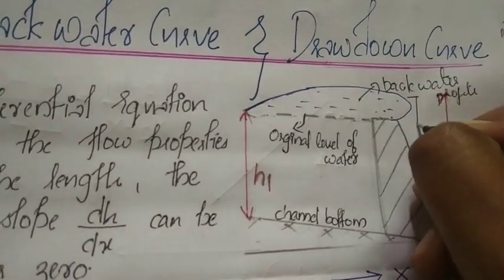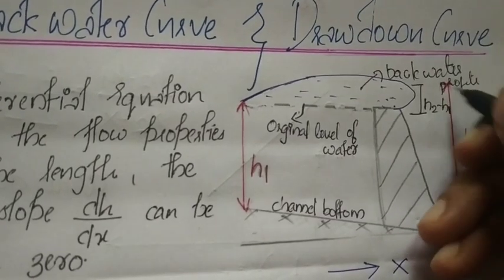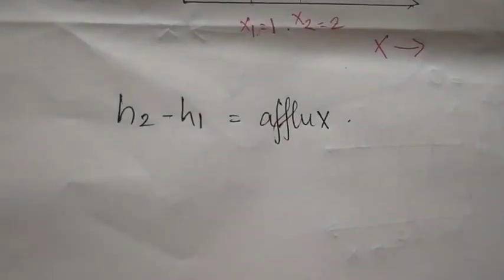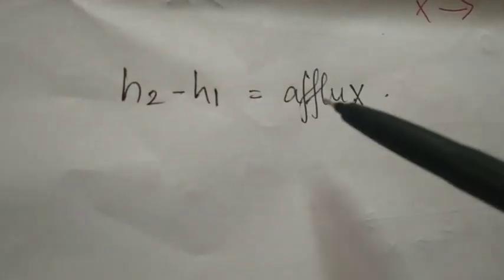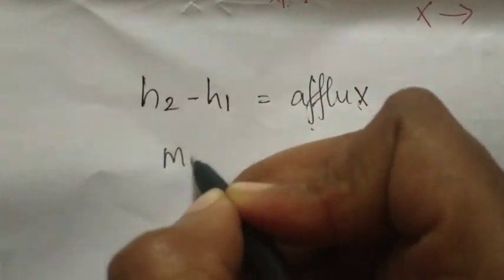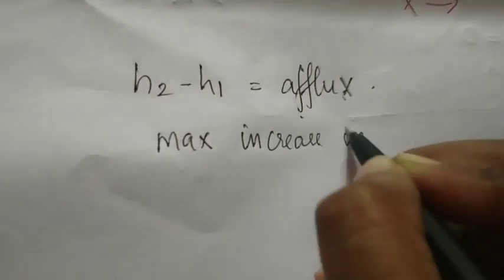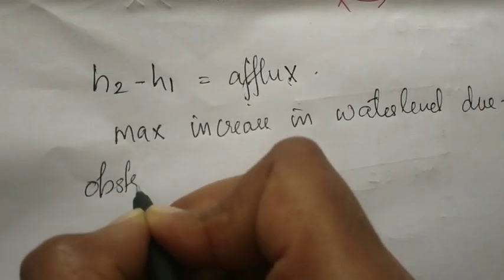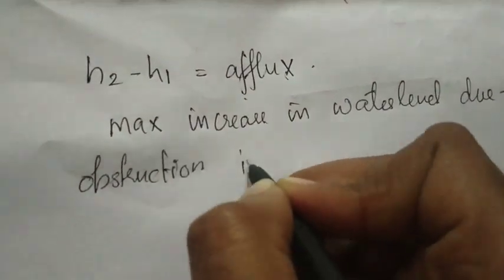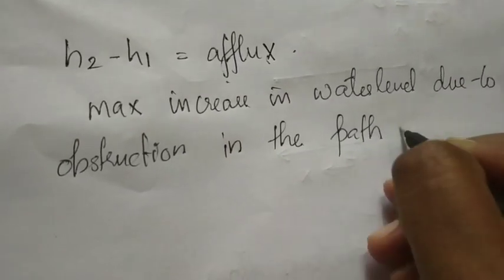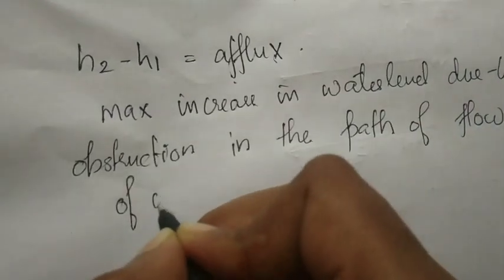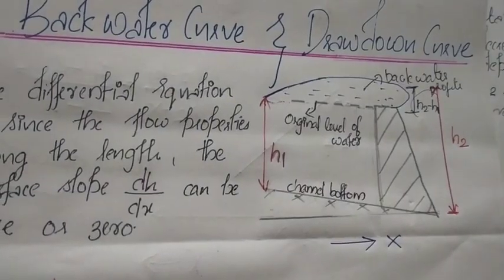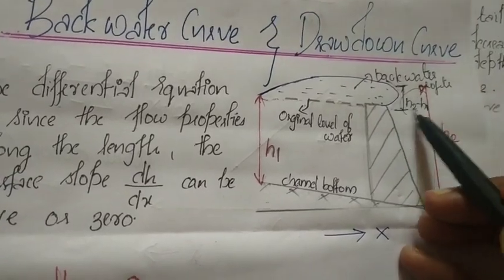The rise in water level, h2 minus h1, is called afflux. Afflux is defined as the maximum increase in water level due to an obstruction in the path of flow of water. So afflux equals h2 minus h1.